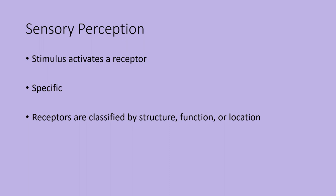With sensory perception, we're talking about a stimulus that activates a receptor cell. Receptors are very specific — if the receptor detects cold temperature, it will not detect hot temperature. If it detects very light touch, it doesn't detect deeper vibrations or deeper pain. Receptors can be classified by their structure, by their function, or by their location.